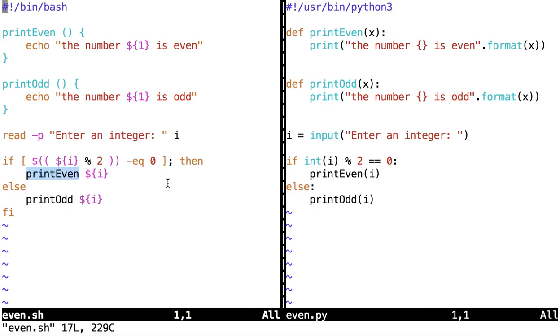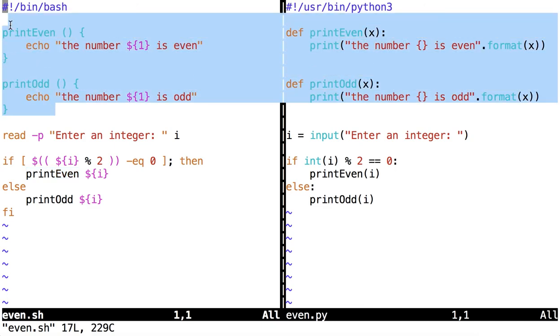One last question about our function calls here. You'll notice that the main part of the code starts below the function definitions. Why do you think that is? Why do you think these functions have to be defined before the main part of the code?